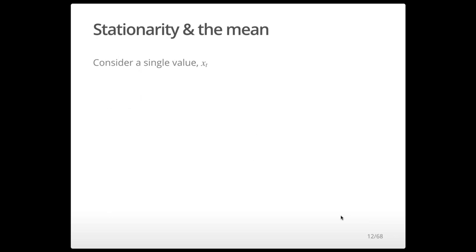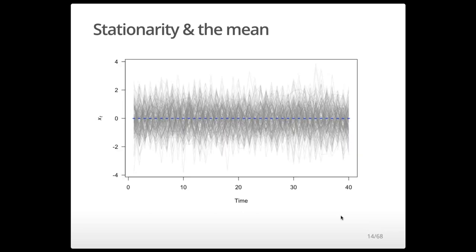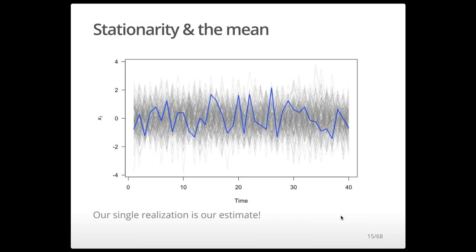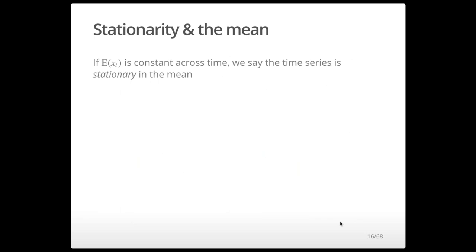Stationarity and the mean: consider a single value x of t. The expectation of x of t is taken across an ensemble of all possible time series — those gray lines representing all possible realizations. The expectation at time t is 0, denoted by blue dashes. In reality, we have just one single realization, which becomes our estimate. If the expectation of x_t is constant across time, we say the time series is stationary in the mean.